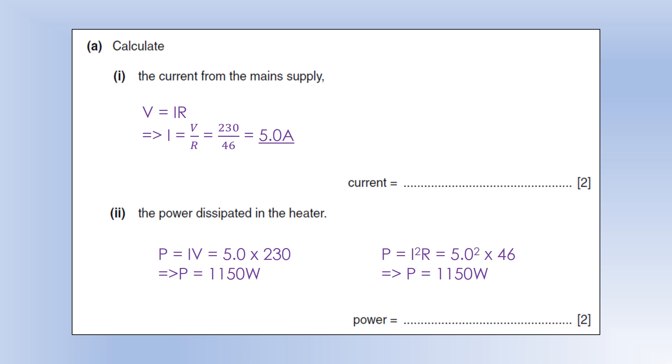Or we can use P equals I squared R, where in the first equation we've replaced V with IR. So we can see we get 5 squared times 46, get exactly the same power, so it doesn't matter how we do it.